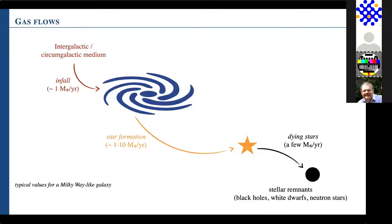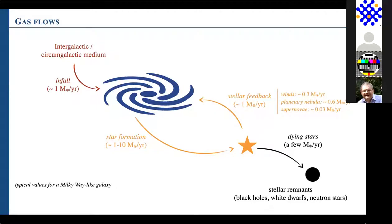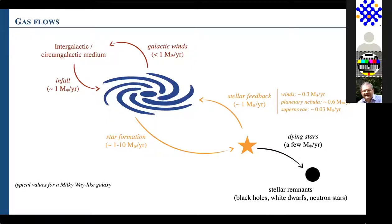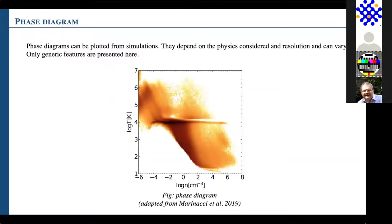The star formation rate is a few solar masses per year. Stars evolve — some die leaving stellar remnants like black holes, white dwarfs, neutron stars — at a few solar masses per year. Other stars eject their outer layers as stellar feedback into the ISM — something like one solar mass per year in winds, planetary nebulae, supernovae. Sometimes feedback from different stars combined can leave the galaxy as galactic winds, though for the Milky Way that's less than one solar mass per year. Putting all these numbers together, the Milky Way is actually losing gas and the depletion time is a few billion years.